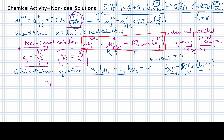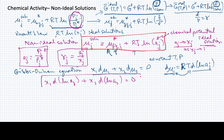Using this in the Gibbs-Duhem equation, we can write a new version: x_1 times the differential of the log of a_1, plus x_2 times the differential of the log of a_2, equals zero. Technically RT multiplies both terms on the left, but since the right side is zero, we can divide by RT to cancel it out. This is our working form for the Gibbs-Duhem equation in terms of activity.